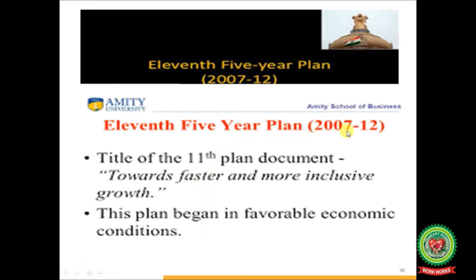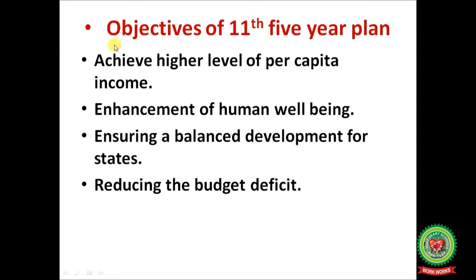The 11th five year plan covered the period from 2007 to 2012. The title of the 11th plan document was 'Towards Faster and More Inclusive Growth.' This plan began in favorable economic conditions. Objectives included: achieving a higher level of per capita income (total income of a region divided by the population); enhancement of human well-being — providing education, employment, and health facilities; ensuring balanced development for all states through irrigation facilities, roads, dams, flyovers, bridges, and subsidies; and reducing the budget deficit.